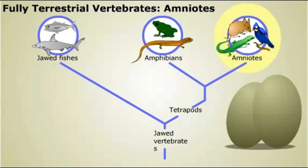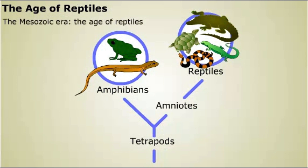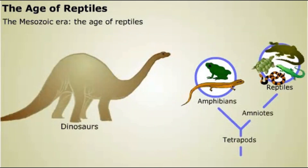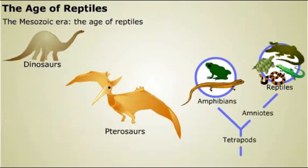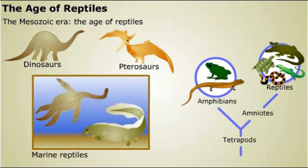Amniotes are named after a feature of their eggs. Reptiles expanded and diversified at the end of the Paleozoic era and became the dominant land vertebrates during the Mesozoic era, frequently called the Age of Reptiles. Those reptiles were far more diverse than the reptiles of today — there were dinosaurs on land, flying reptiles called pterosaurs, and a variety of reptiles that had returned to the sea.